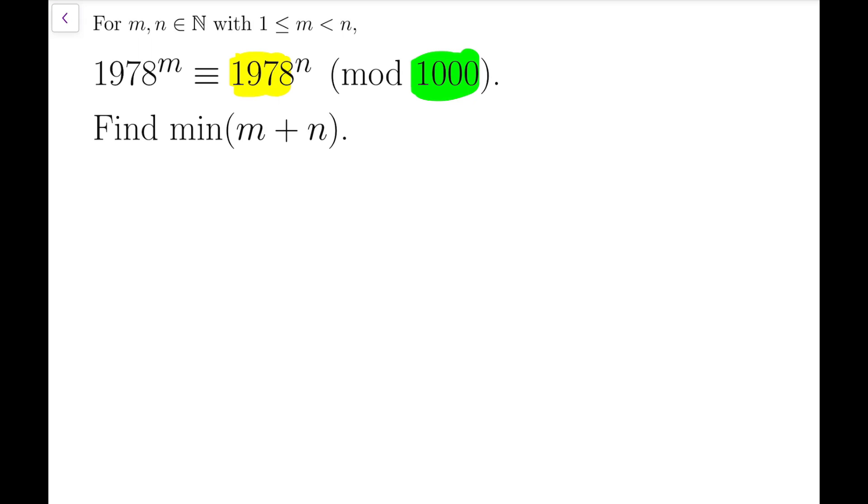Starting from this equation, I can say that 1978ⁿ minus the same number to the power of m is congruent to 0 mod 1000. And I'm going to take common factor, because we know that we must have n to be the larger number, so I'm taking power m as a common factor. So I have this power multiplied by n minus m instead of n, and then this power is subtracted by 1, and this product is congruent to 0 mod 1000.